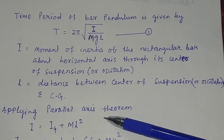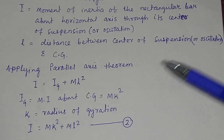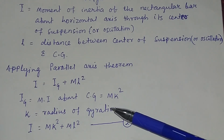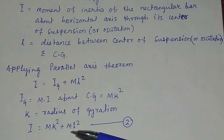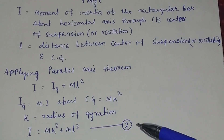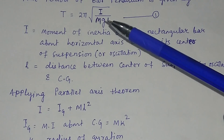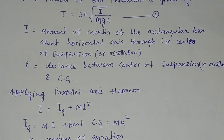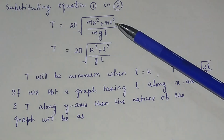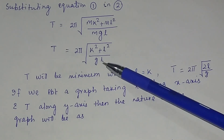We have proved that T equals 2 pi times the square root of i divided by mgl. Applying the parallel axis theorem, i will be equal to i_g plus ml squared, where i_g is the moment of inertia about the center of gravity, equal to mk squared, and k is the radius of gyration. So i equals mk squared plus ml squared. Substituting into equation 1, T equals 2 pi times the square root of k squared plus l squared divided by gl.